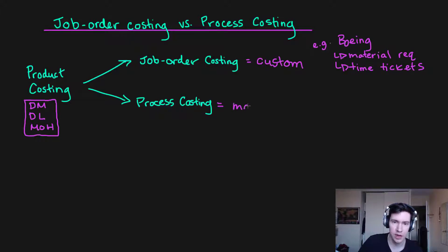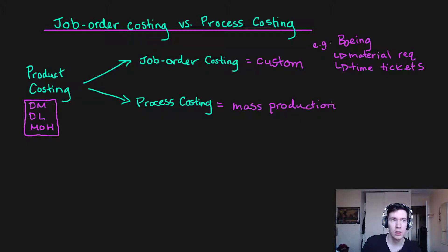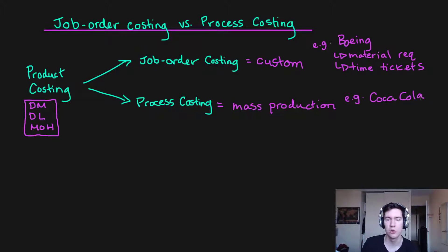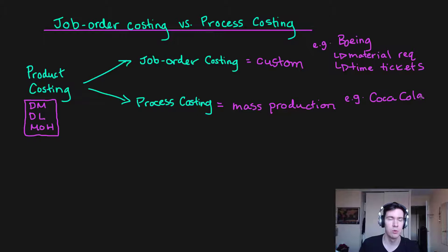Process costing, on the other hand, is used in a mass production environment where the products are very similar in nature — they could even be identical. An example is the Coca-Cola Company: each of their soft drinks is a standard size and amount filled in a bottle. Process costing is a much more effective way to accumulate and assign costs for mass production.